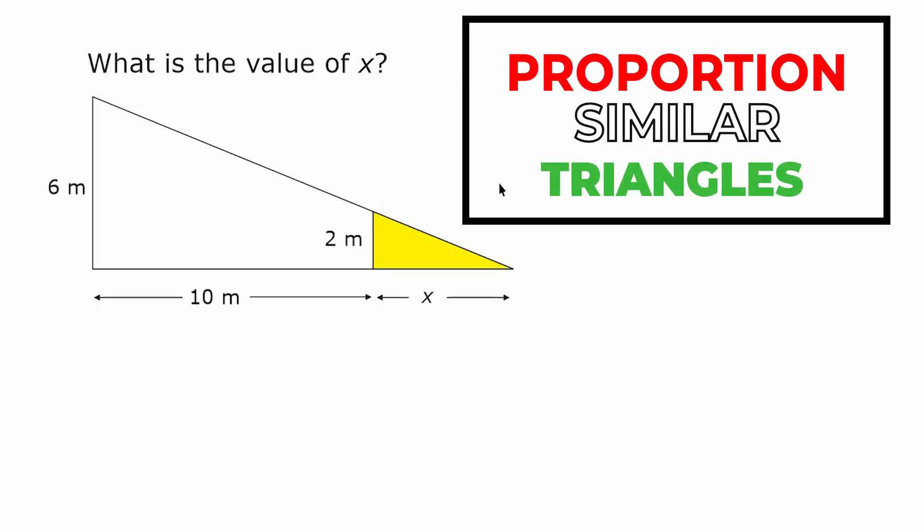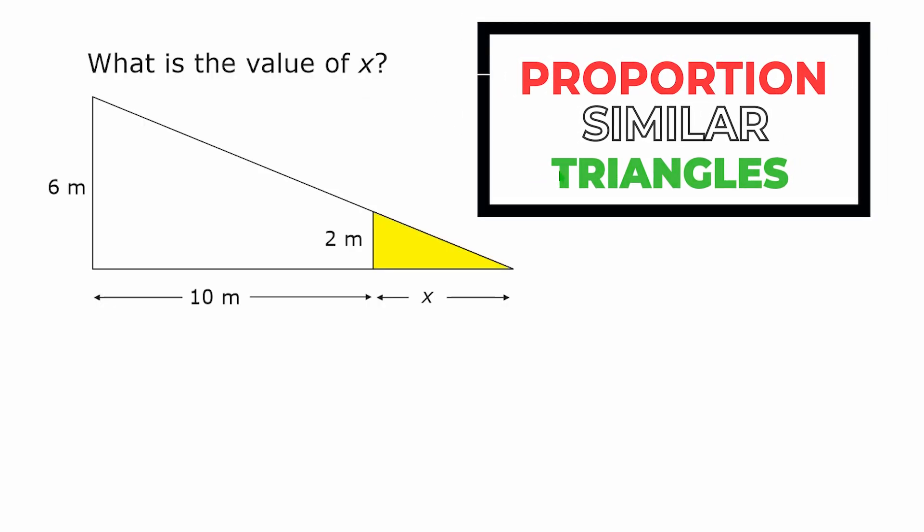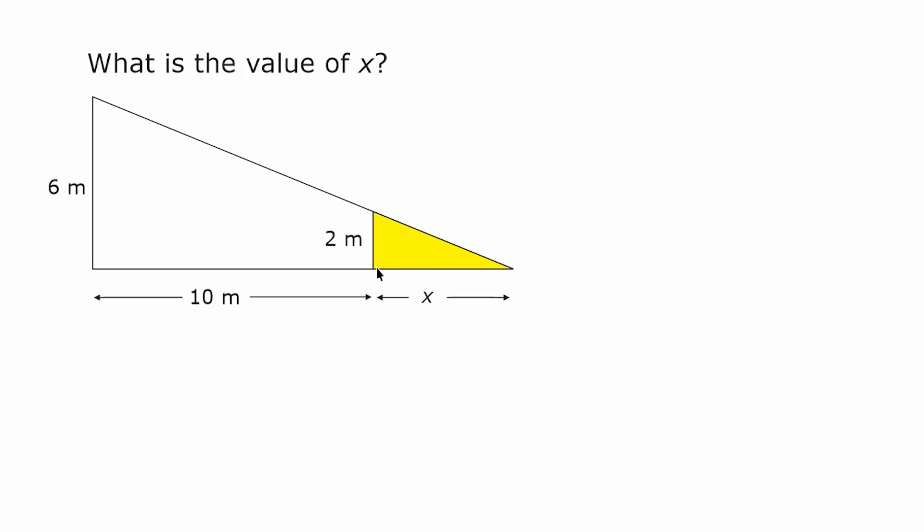All right, what we have to do in this problem is figure out what the value of x is. And x is the distance from here to here, so it is one of the two legs of this smaller right triangle.